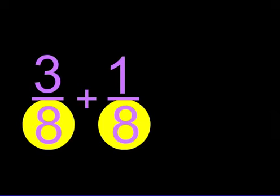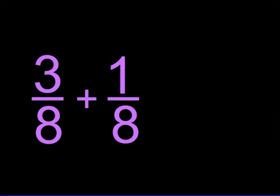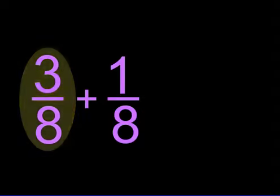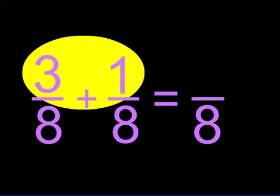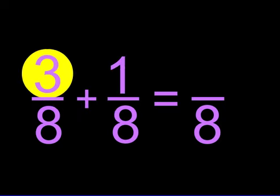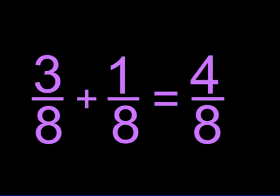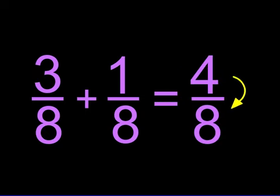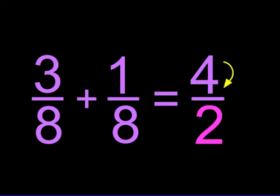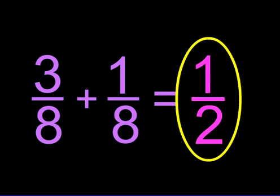Adding and subtracting fractions that have the same denominator is easy. Here we have three-eighths plus one-eighth. You can see that the denominators are the same, so we will have eight as our denominator. Now we just add the numerators. Three plus one equals four. Four over eight can further reduce. Four goes into eight two times and four goes into itself one time. So our answer is one-half.